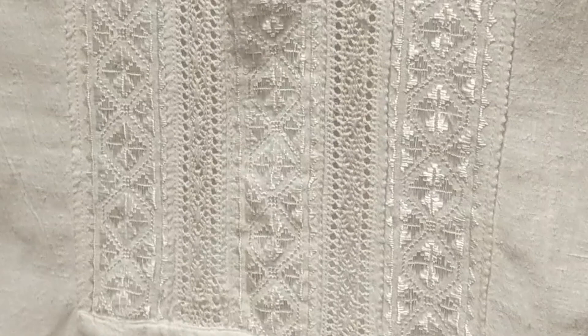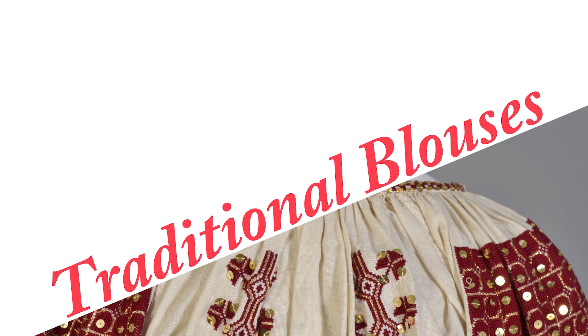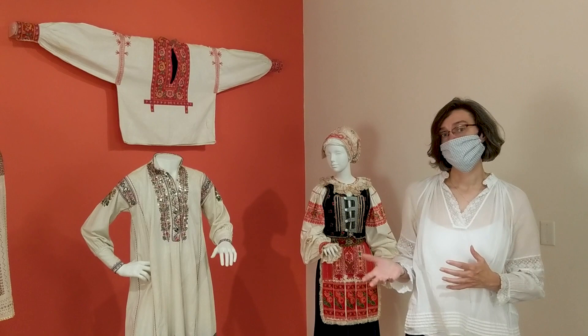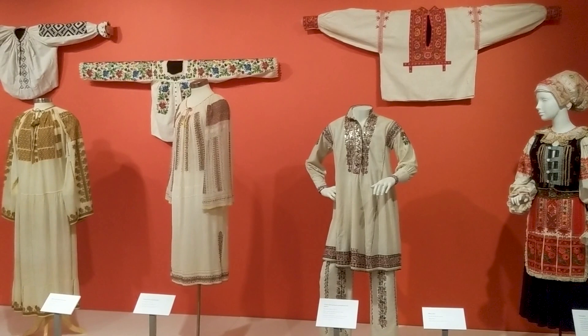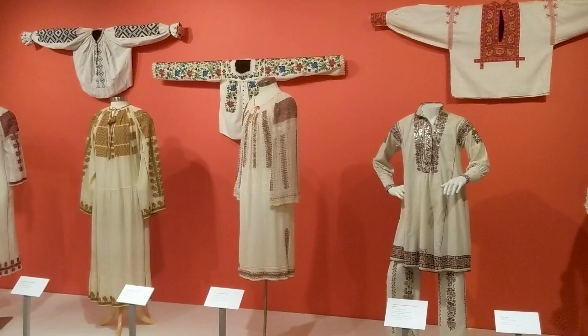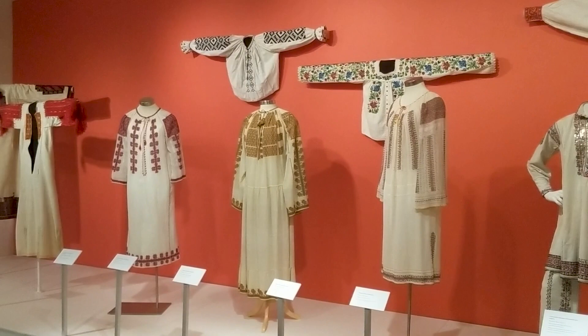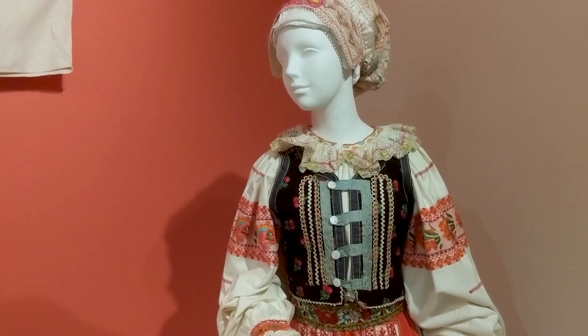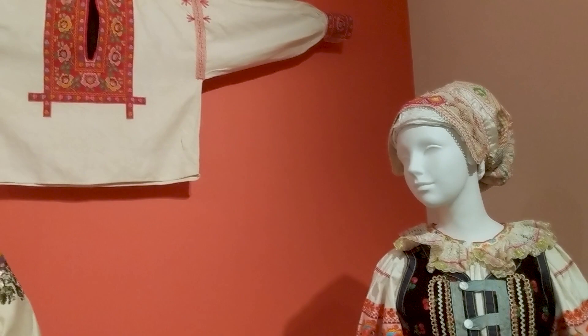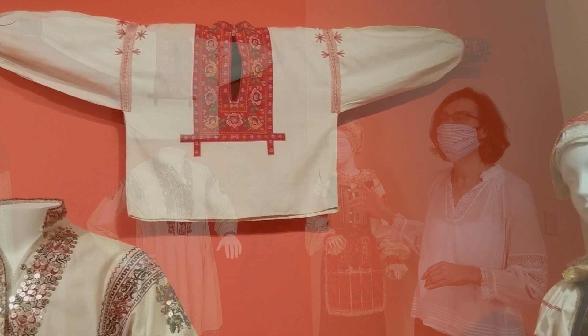The second gallery of the exhibition is focused on one particular element of regional dress — the peasant blouse. Along this back wall, we see examples of traditional blouses from all over Europe, and you can see the tremendous variation across the continent. While a seemingly simple piece, it has tremendous potential in differences for ornamentation, design, and cut. It is worn not only by women, but men as well. The first two examples are from the same region of Slovakia, and you can see the similarities in ornamentation between the men's and women's outfits, but also the differences in the placement of decoration and the cut of the shirt.